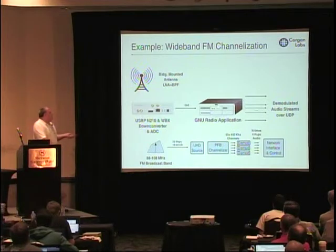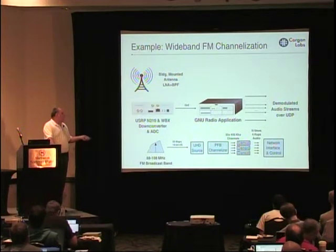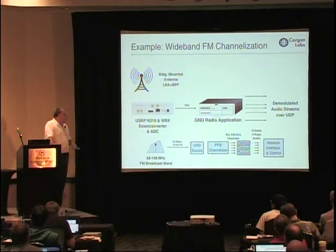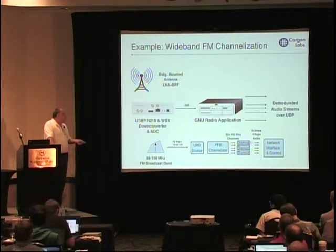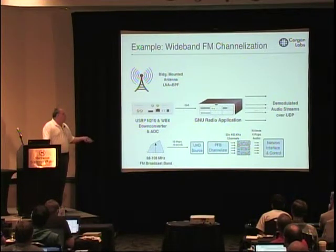As you might imagine, this is very CPU intensive — having a 25 mega-sample per second IQ stream coming into a box running a channelizer filter bank as well as up to potentially 50 demodulators. And in fact it is. When we worked on this initially, the PFP channelizer was implemented as one GNU Radio block, and the CPU requirements of the demodulators were pretty small compared to what this block was using.